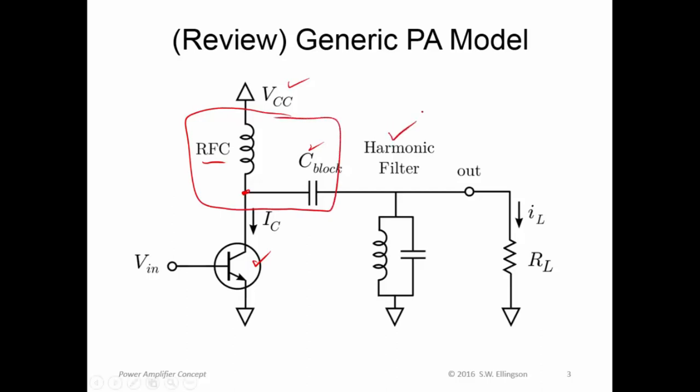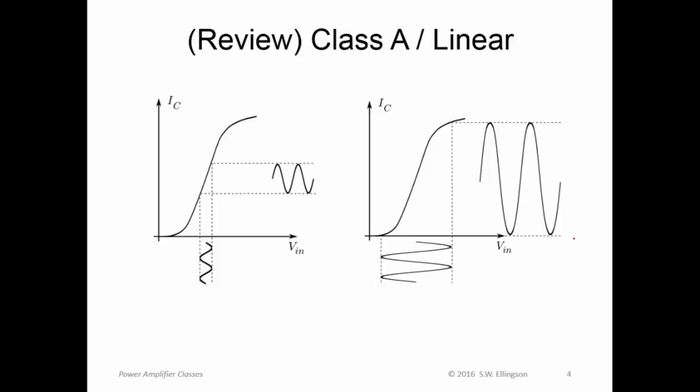The harmonic filter, which we talked about very briefly in the last lecture, but we'll have more to say about this time. And then, of course, the load hanging out over here. Now, Class A linear operation, which we explained in the previous lecture, is the one that you're used to. And it's the one that we assumed in small signal RF design, which is we select some bias point here, where the input-output characteristic is approximately linear. A small magnitude here translates to the same waveform with a larger magnitude over here.